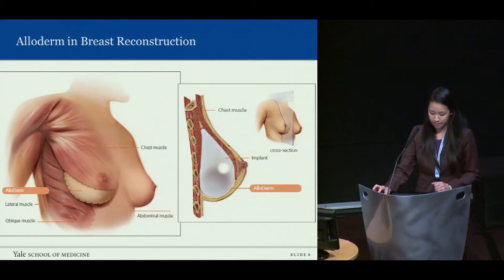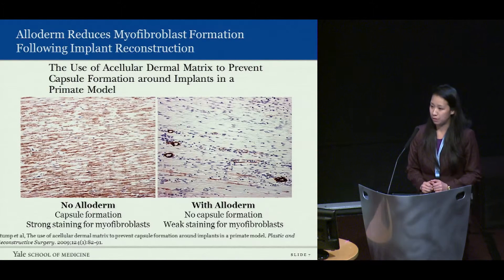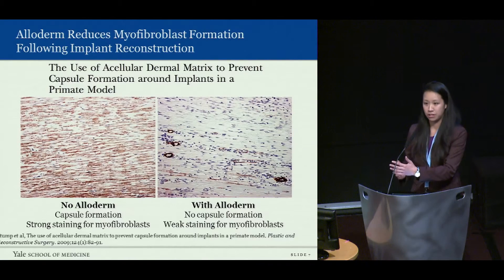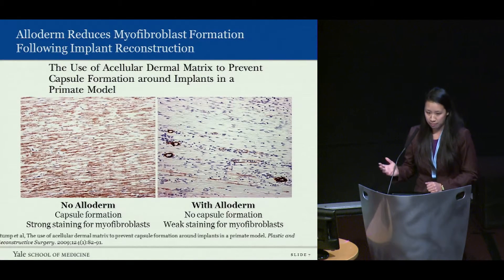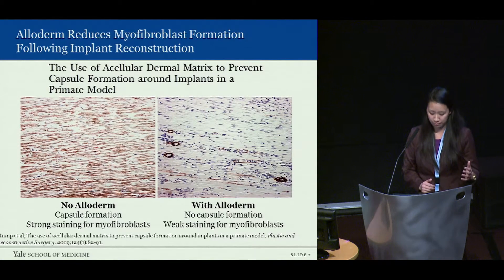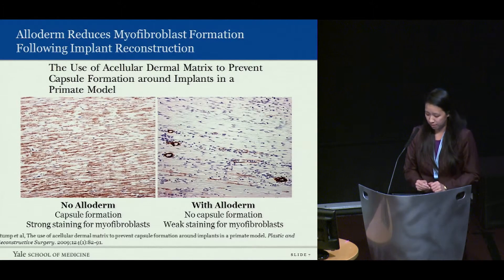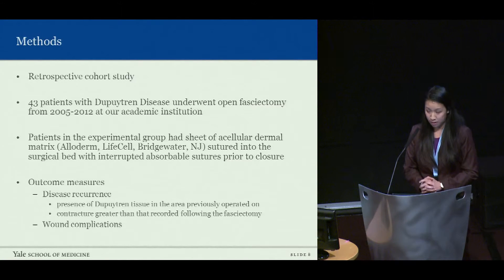There's even a recent study showing that Alloderm can reduce local myofibroblast formation in the setting of implant reconstruction. This study was performed in monkeys undergoing implant placement — in half the monkeys a sheet of Alloderm was placed on top of the implant, and in the other half no Alloderm was used. Ten weeks after implant placement, monkeys without Alloderm showed capsule formation and strong myofibroblast staining histologically, whereas monkeys with Alloderm showed no capsule formation and very weak myofibroblast staining.